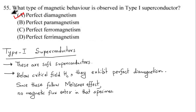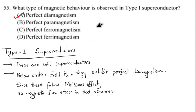Question number 55: What type of magnetic behavior is observed in a type 1 superconductor? The options are perfect diamagnetism, perfect paramagnetism, perfect ferromagnetism, or perfect ferrimagnetism. This is from the solid state physics superconductor chapter. Superconductors are classified as type 1 and type 2. Type 1 superconductors are soft superconductors and strictly follow the Meissner effect.